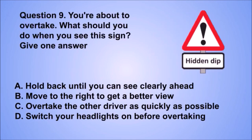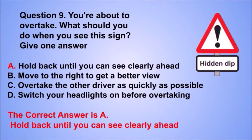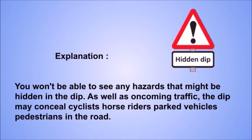Question 9. You're about to overtake. What should you do when you see this sign? The correct answer is A: Hold back until you can see clearly ahead. You won't be able to see any hazards that might be hidden in the dip. As well as oncoming traffic, the dip may conceal cyclists, horse riders, parked vehicles, or pedestrians in the road.